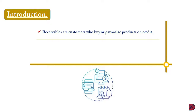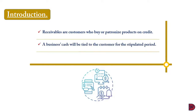We can have staff receivables — those who take loans from the business to pay later. We can also have other receivables, like when you are expecting payments from your bankers or from people you deal with, not from the main line of business. For example, if you are in the sale of cars but you sell your building to somebody who has not yet paid, that is not a trade receivable. A business's money will be tied to customers for the period that the debt remains unpaid.